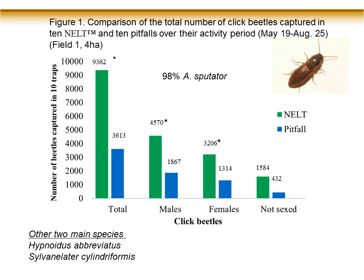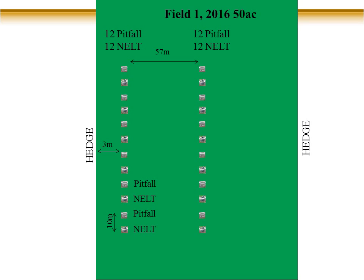In the first year we used NELT traps, it was a four-hectare field and we had just ten traps in one corner of the field. We found 9,362 beetles, with a lot of females in those traps as well as other species — that was really good. Then we thought about how a grower could practically use this while still doing all the work of growing a crop.